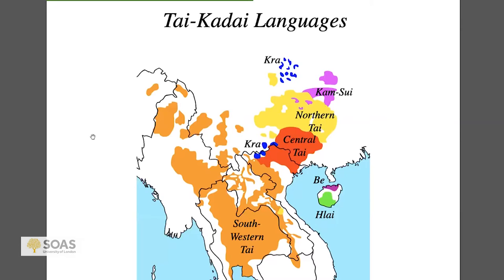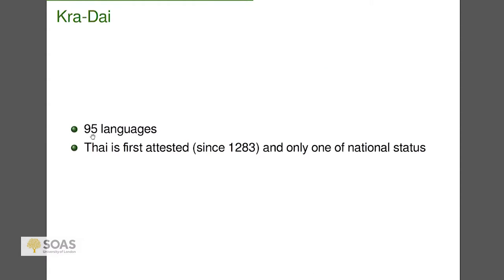This family is called both Tai-Kadai and Kra-Dai. Looking at the distribution, little enclaves up in China with Kra suggest the family comes from China and spread south. The colored blobs get larger and less diverse as you go south — Northern Thai, Central Thai, and Southwestern Thai being the largest. There are 95 Kra-Dai languages; the first attested is Thai, written down in 1283, and it is the only one of national status. The most famous Kra-Dai language in China is Zhuang, associated with the Zhuang ethnicity.